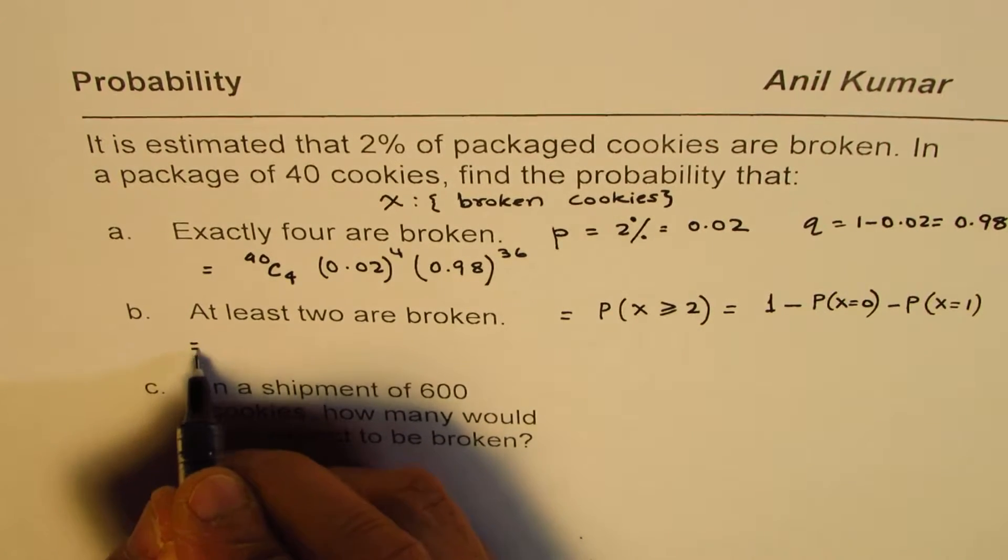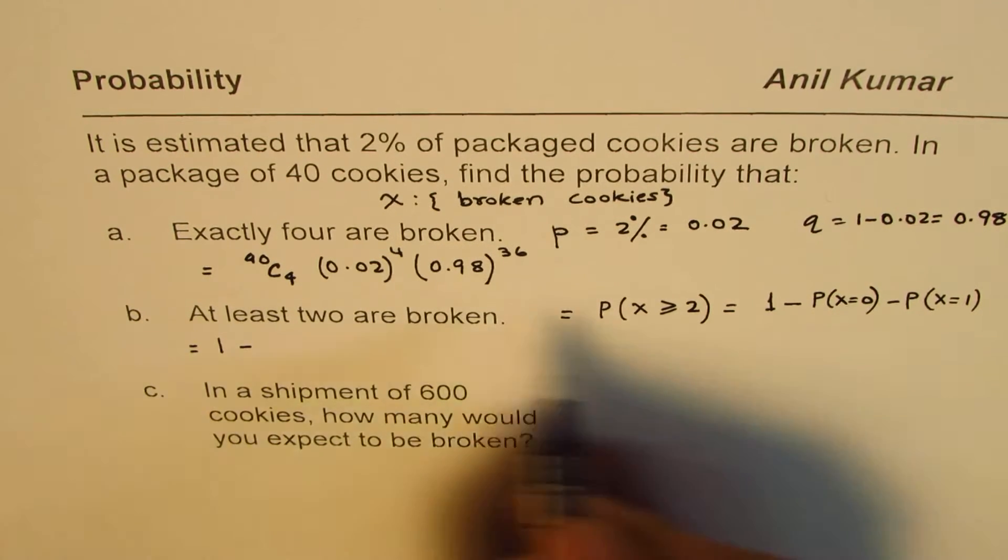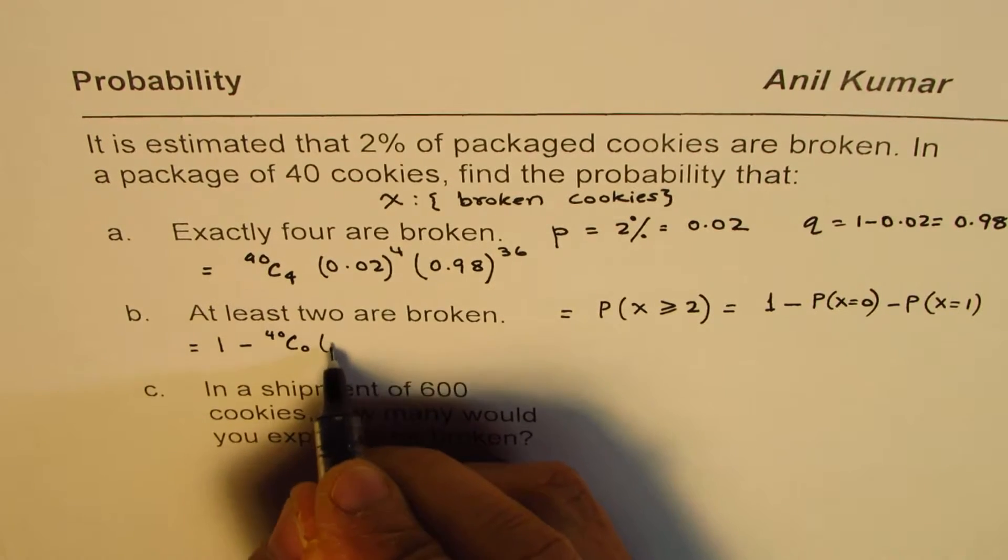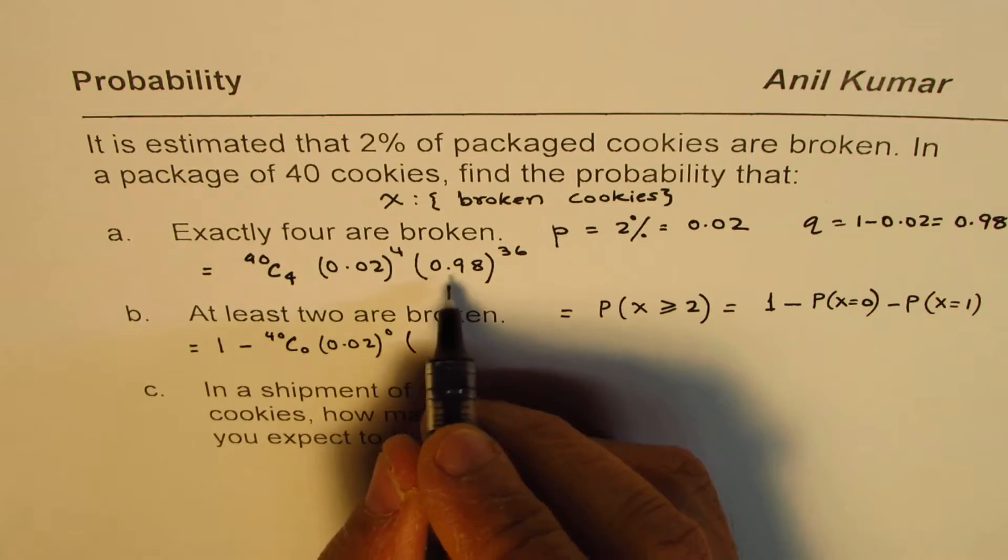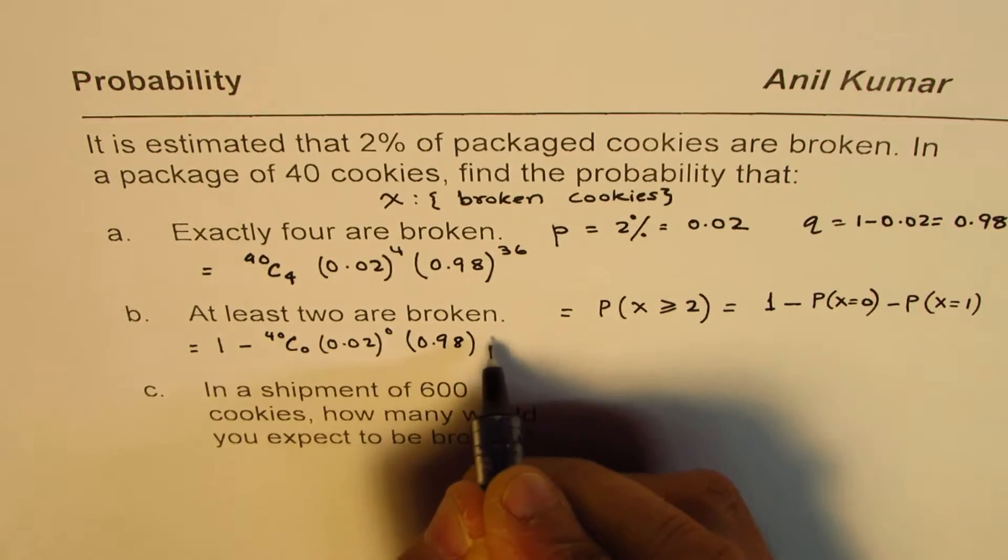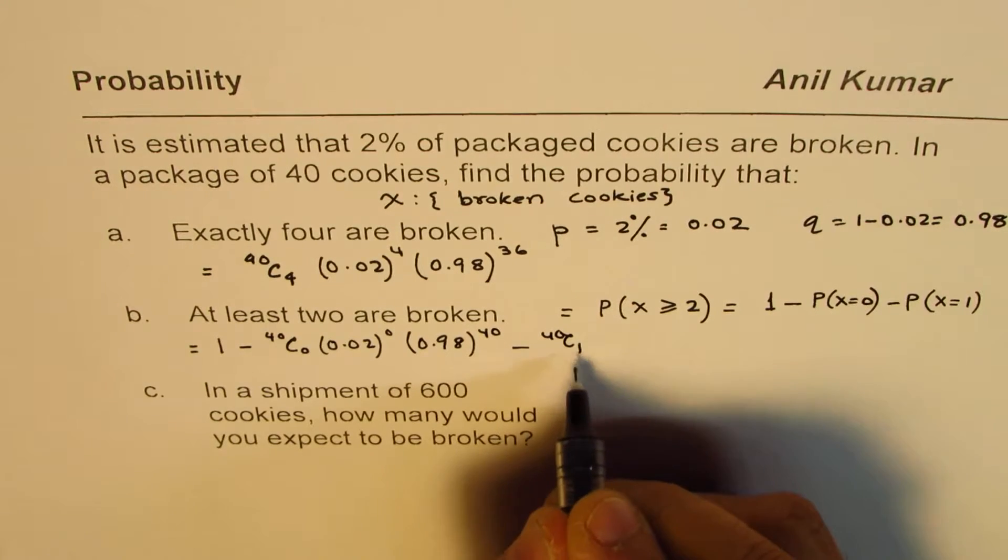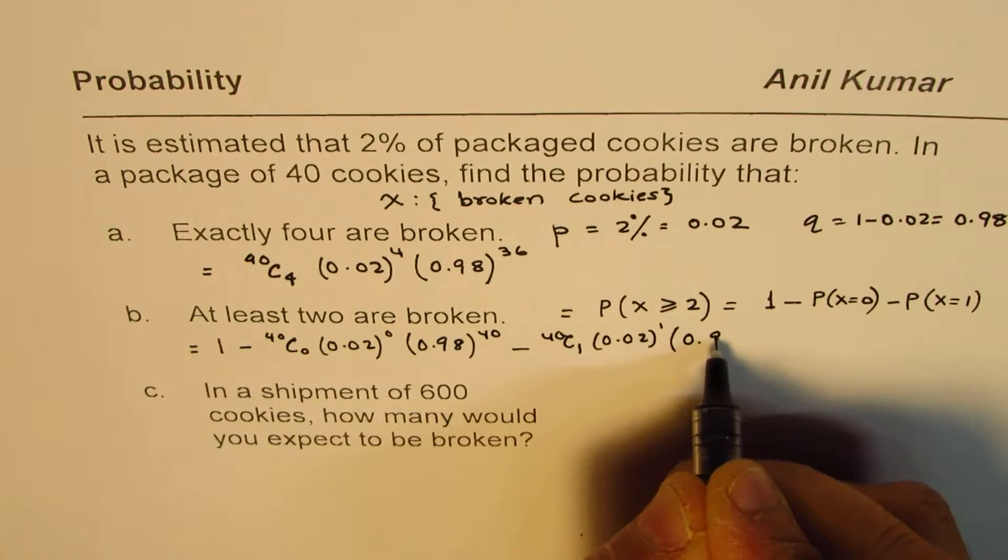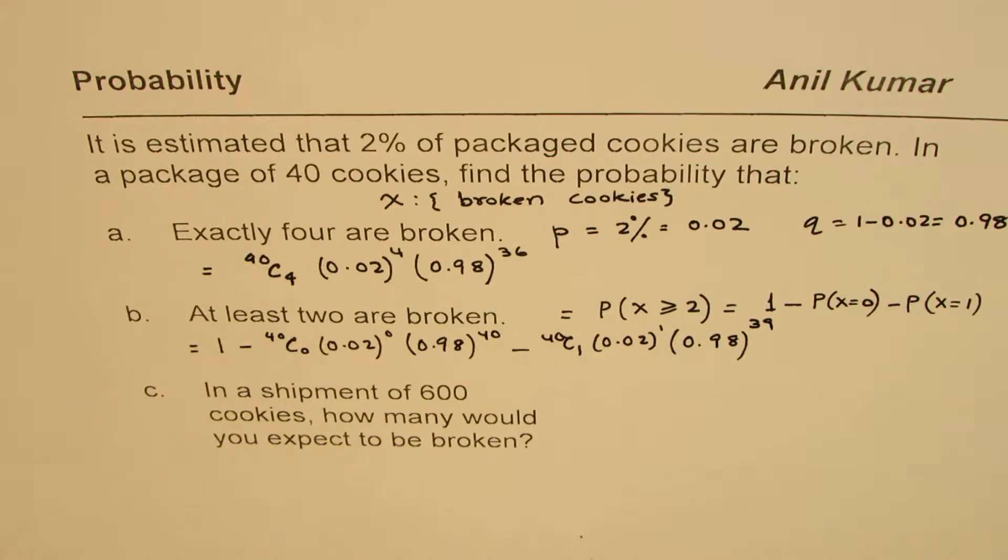In this case, we can write this as equals to 1 minus probability of none of them broken, means 40C0 for 0.02 to the power of 0, and that means all are good, 0.98 to the power of 40. Take away 40C1, 1 broken, 0.02 to the power of 1, and 0.98 to the power of 39. That is what you get as your solution. You can use your calculator to calculate these values.